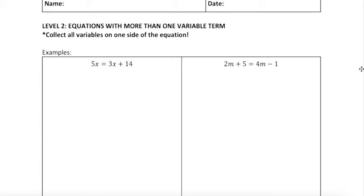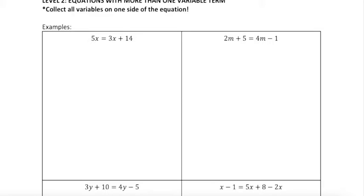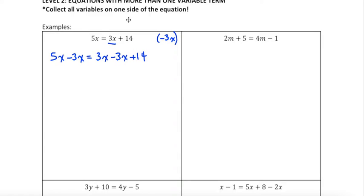So the first example: I have 5x equals 3x plus 14. What I want to do is take all of my variable terms and move them to one side. I'm going to start by taking my 3x and moving it to the same side as my 5x. Since this is a positive 3x, I need to subtract 3x from both sides — opposite operations — to keep my equation balanced. So 5x minus 3x is 2x, and 3x take away 3x is 0, so those two terms disappear, and I'm left with 14 on the right-hand side.